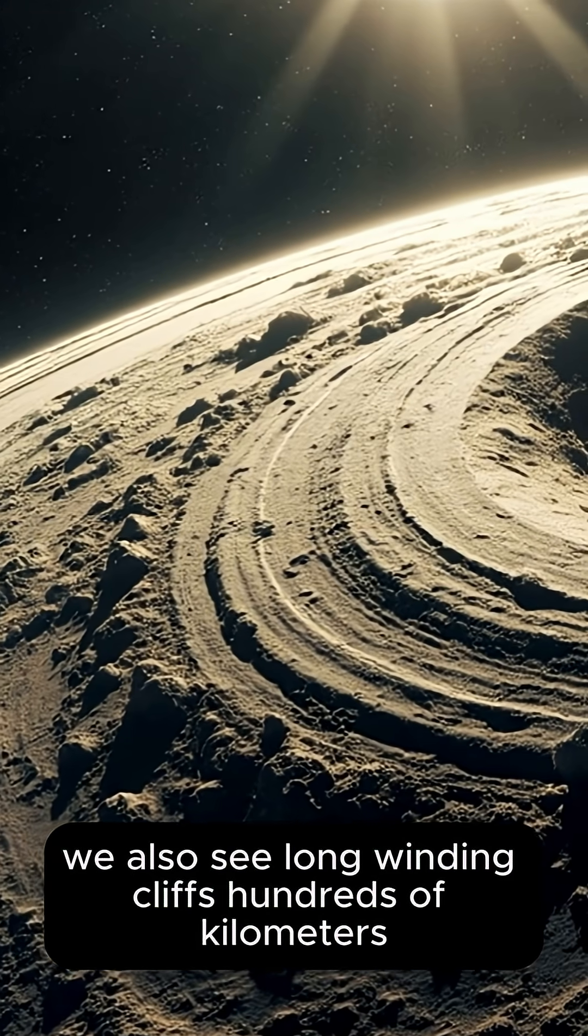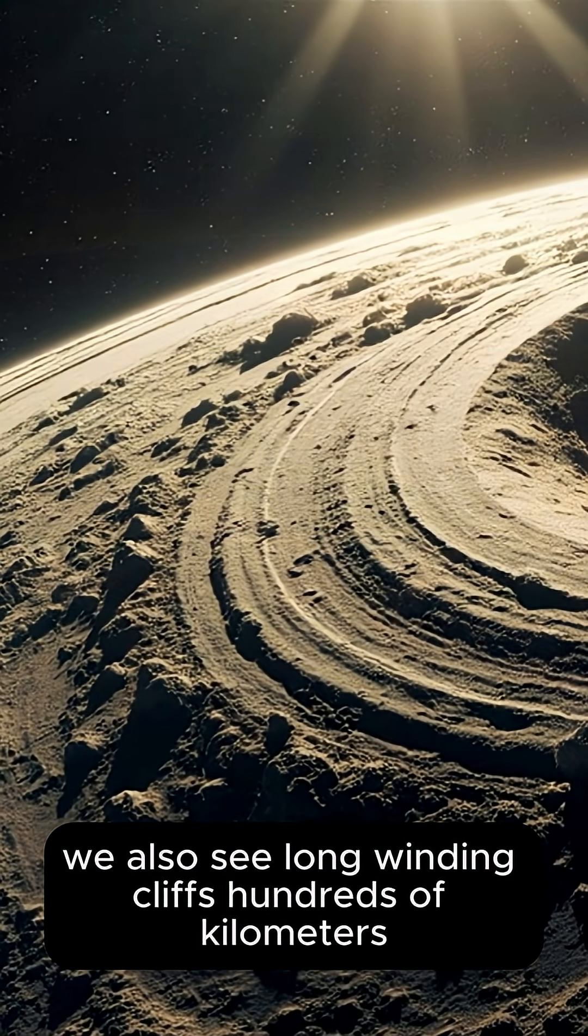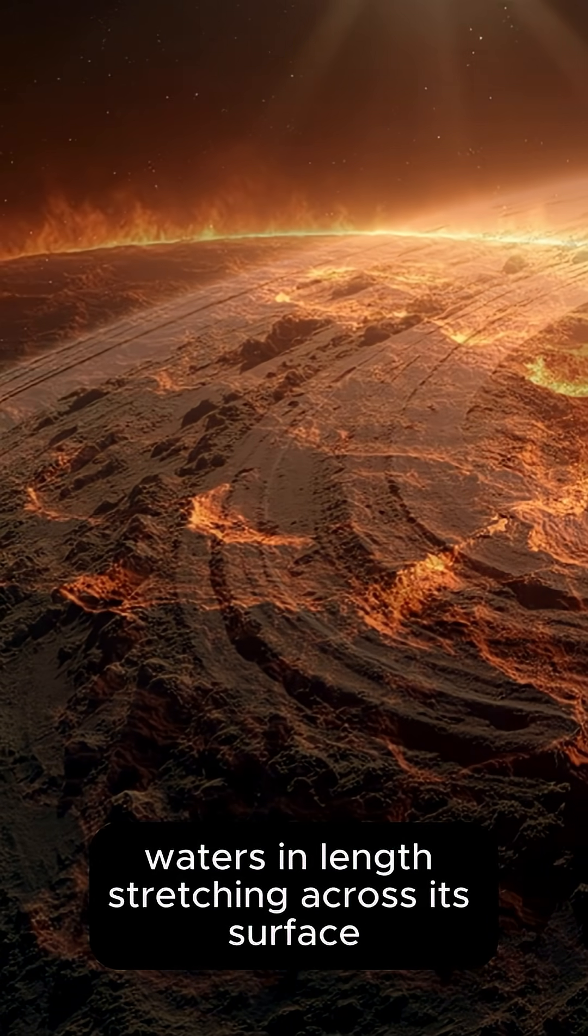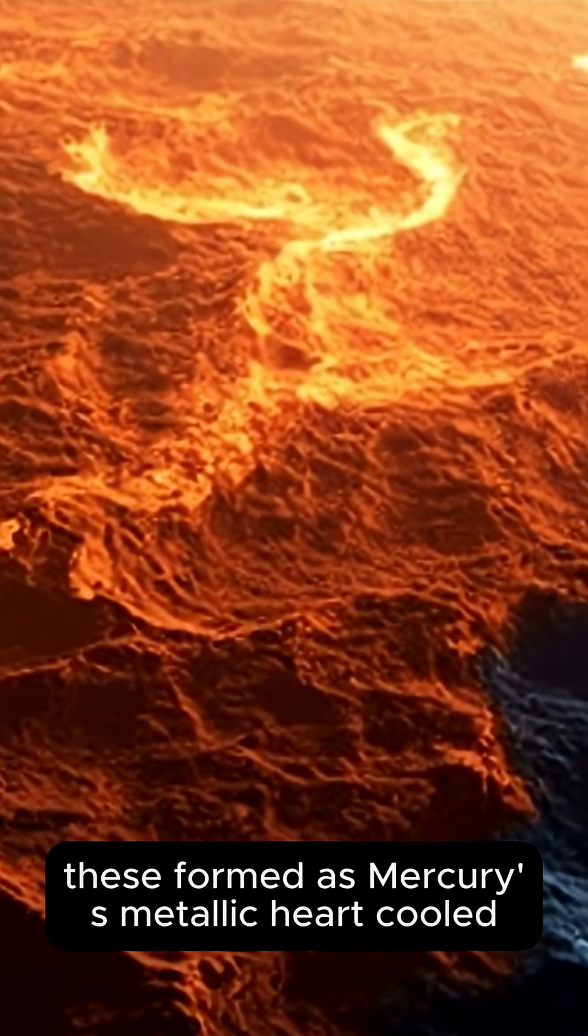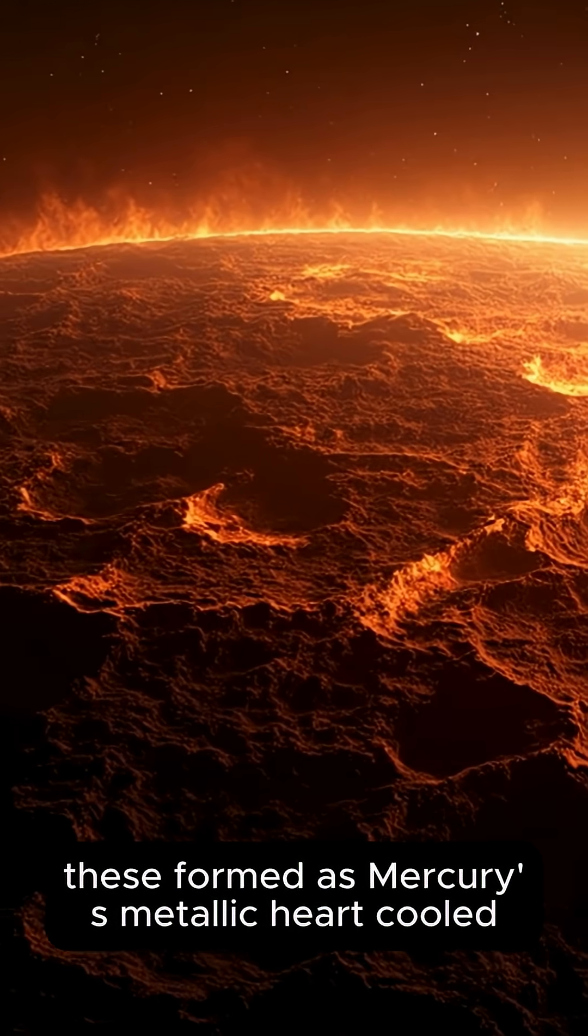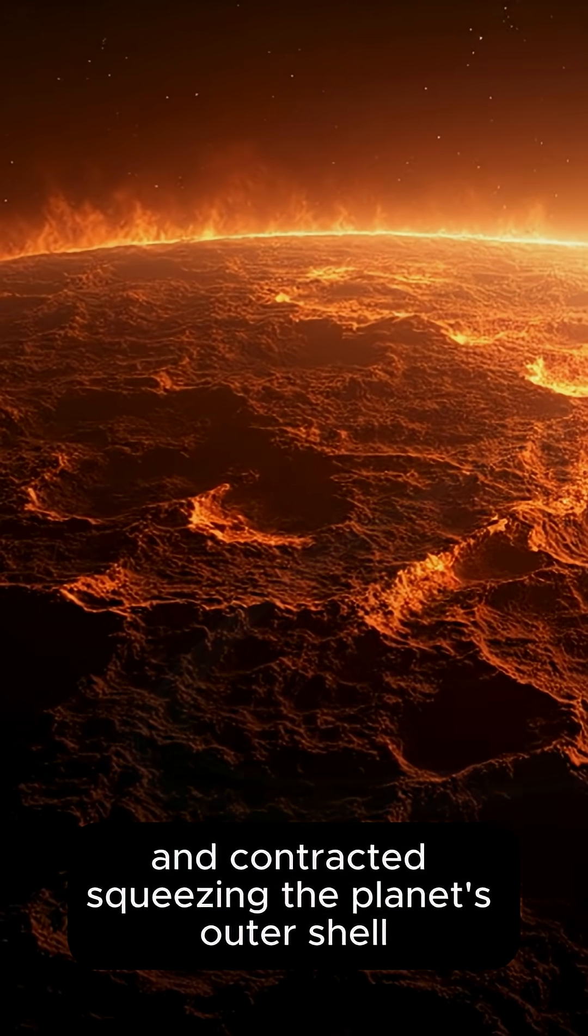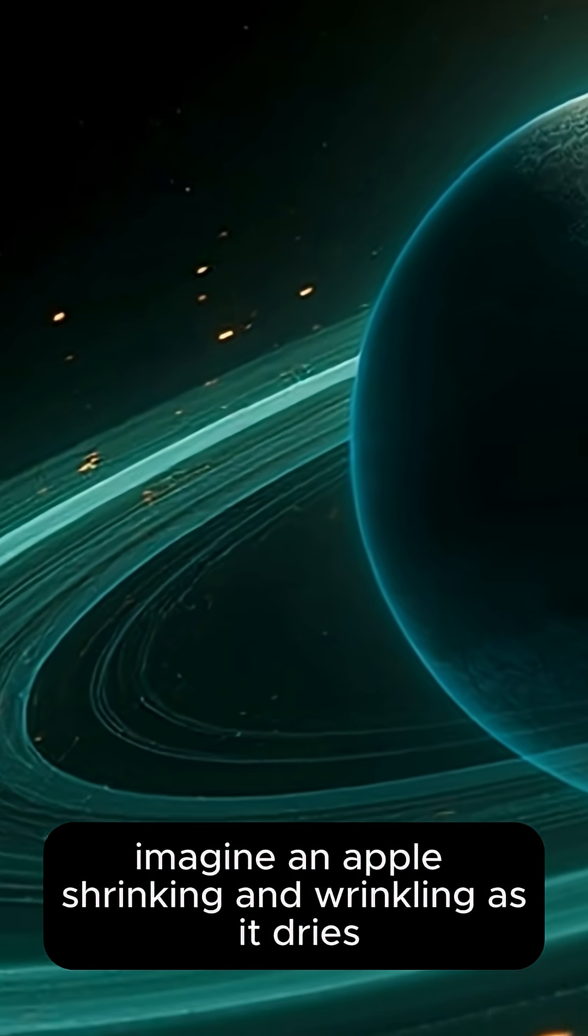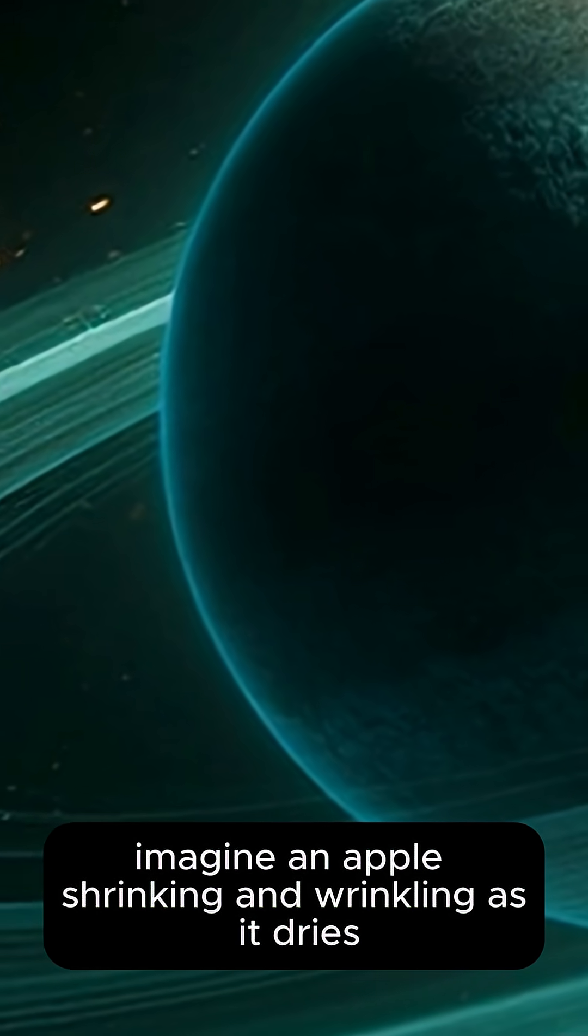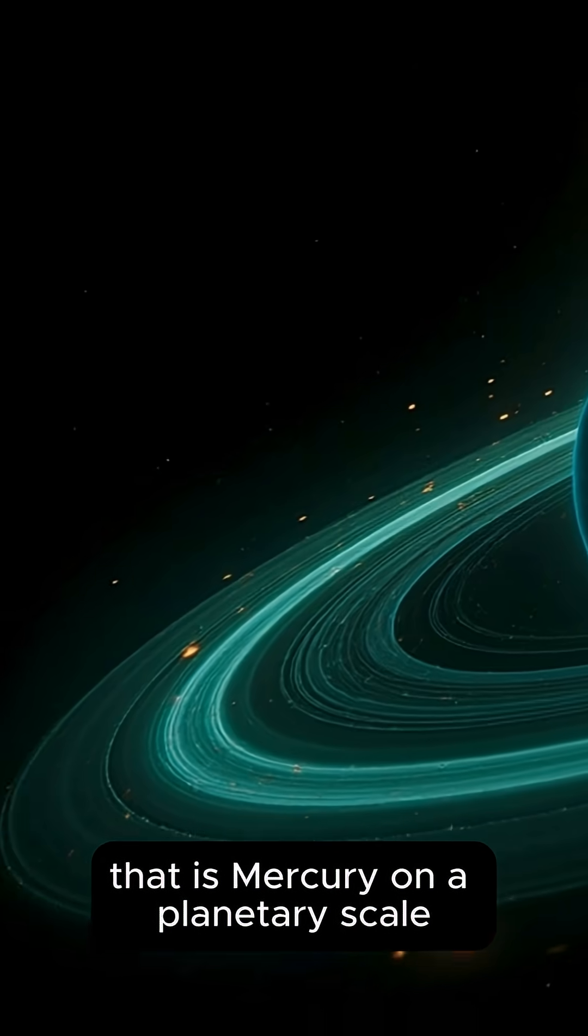We also see long, winding cliffs hundreds of kilometers in length stretching across its surface. These formed as Mercury's metallic heart cooled and contracted, squeezing the planet's outer shell. Imagine an apple shrinking and wrinkling as it dries—that is Mercury on a planetary scale.